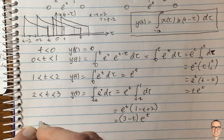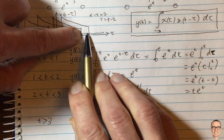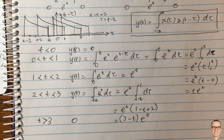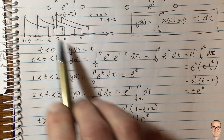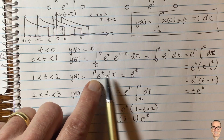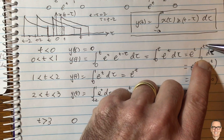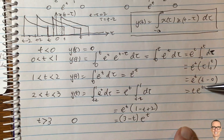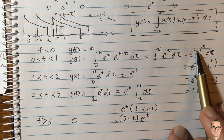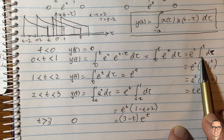For t bigger than three, the edge moves past the region and there's no overlap again, so the answer is zero. One of the main things that confuses people with these exponentials is that e to the power t is a constant with respect to tau and can be taken out the front of the integral, even though the limits still involve t. It's just a constant number with respect to tau, which is the variable of integration.